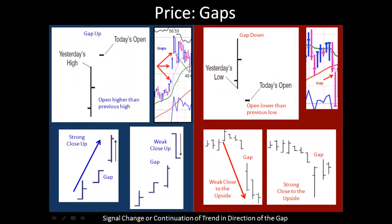Now let's take a look at gaps. A gap is simply when the price opens higher than the previous day's high. So here is your previous day — there's the high and here's the gap. On a chart it would look like this: you have a little jump up and then another little jump up. When you have a gap to the upside with a strong close in the upper 25% of the range, that's a sign of demand and strength.